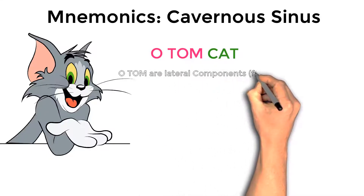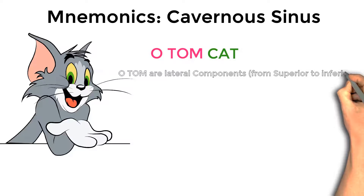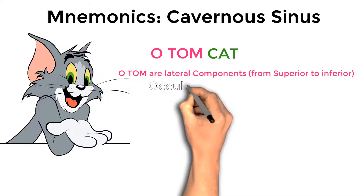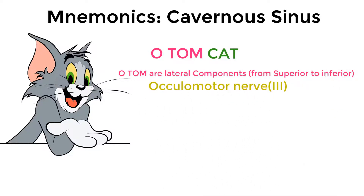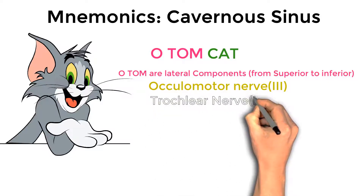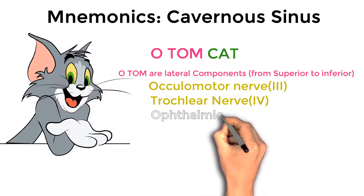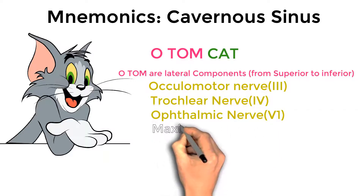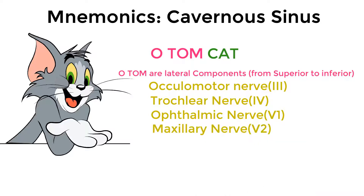O TOM represents the lateral wall components from superior to inferior. O stands for the oculomotor nerve, which is the third cranial nerve. T stands for the trochlear nerve, which is the fourth cranial nerve. O stands for the ophthalmic nerve, which is the first division of the fifth cranial nerve. M stands for the maxillary nerve, which is the second division of the fifth cranial nerve.